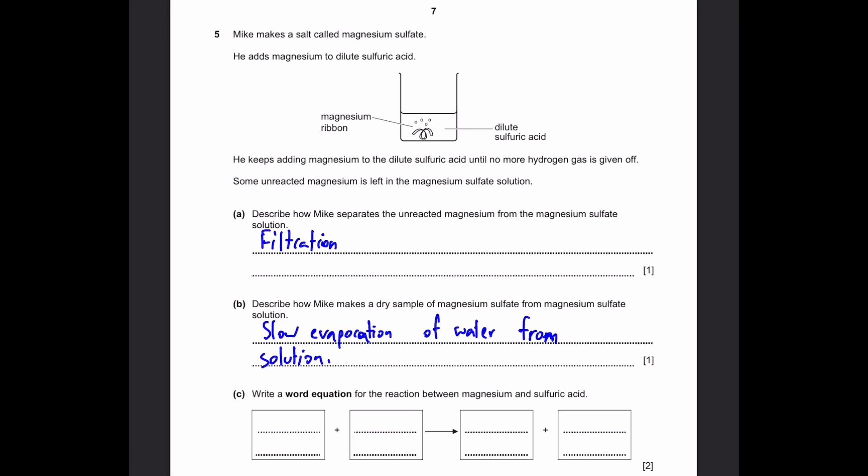Part C. Write the word equation for the reaction between magnesium and sulfuric acid. So first we have two reactants and we have two products. Two reactants are magnesium and sulfuric acid gives magnesium sulfate plus hydrogen, hydrogen gas. That's why it's saying in the question until no more hydrogen gas is given off.